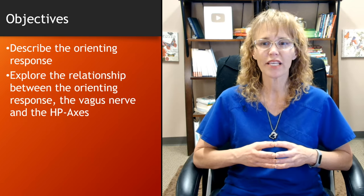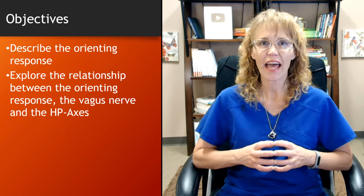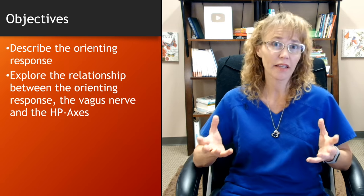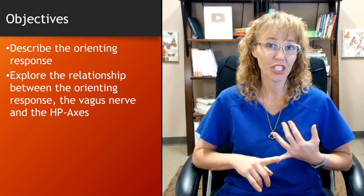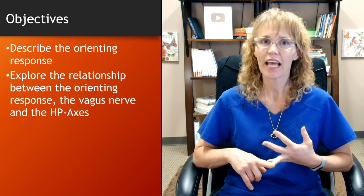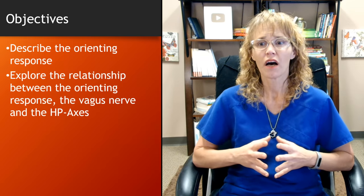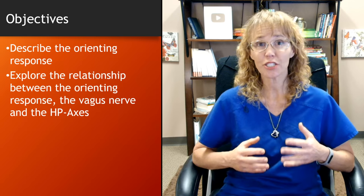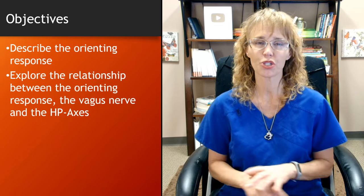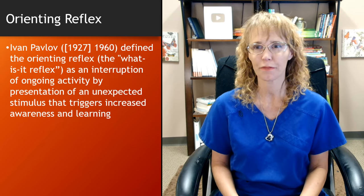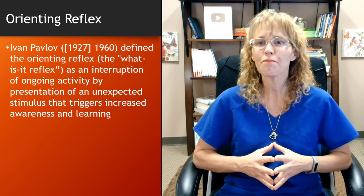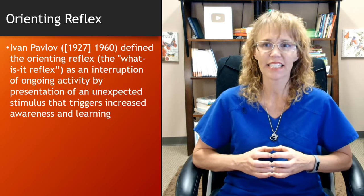We're going to talk about the relationship between the orienting response, the vagus nerve, and the HP axes. You may be thinking, well we've already talked about the HPA axis — yeah, but we also have the HPG (hypothalamic-pituitary-gonadal) and hypothalamic-pituitary-thyroid axes. The vagus nerve is wound up in all of those axes, and whenever the HPA axis or your threat response system is triggered, it triggers those other two — so I collectively call them the HP axes.